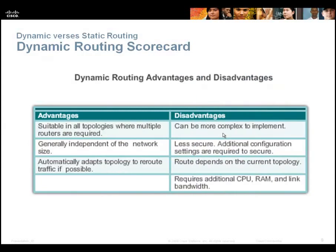Dynamic routing protocol advantages: they're suitable in all topologies, they typically scale well and allow growth, and they adapt when you change the network. The downsides are they can be complex to implement — there's a lot you can do with EIGRP or OSPF — and they're less secure. If someone gets hold of one of your routers or connects to your physical network, they can see routing updates and build a map of your network. They also require CPU and bandwidth.